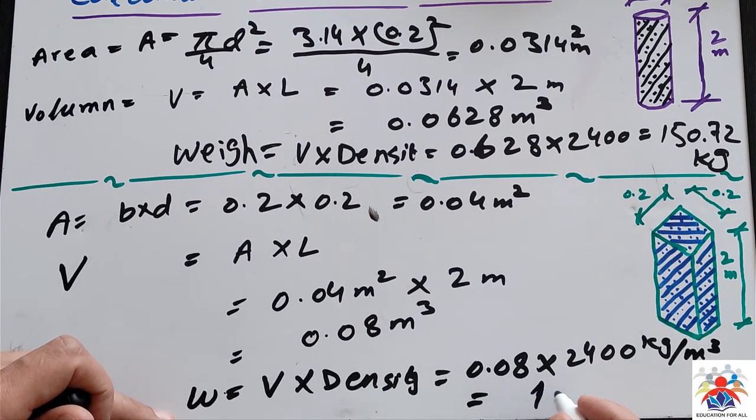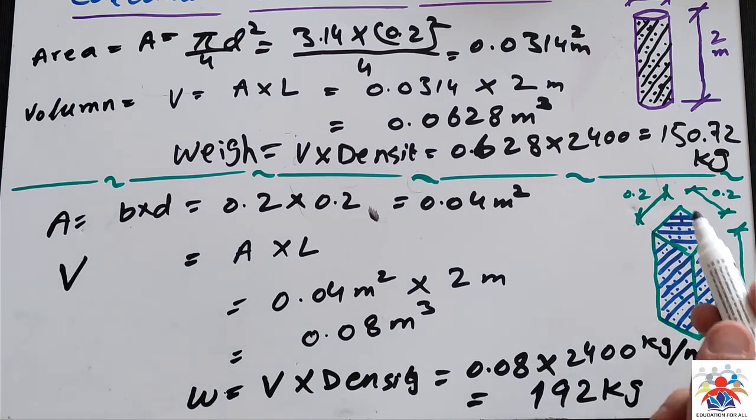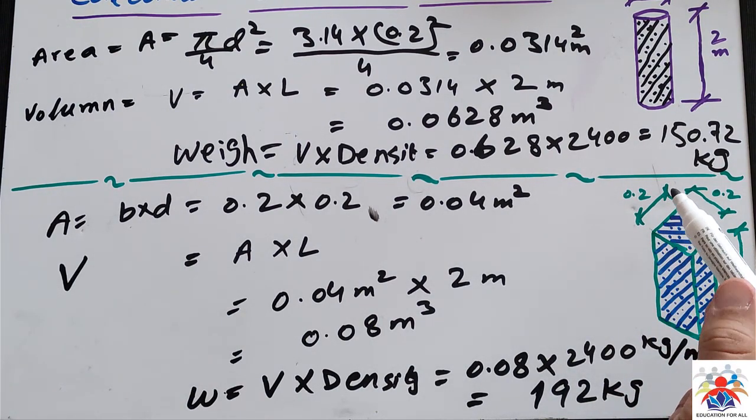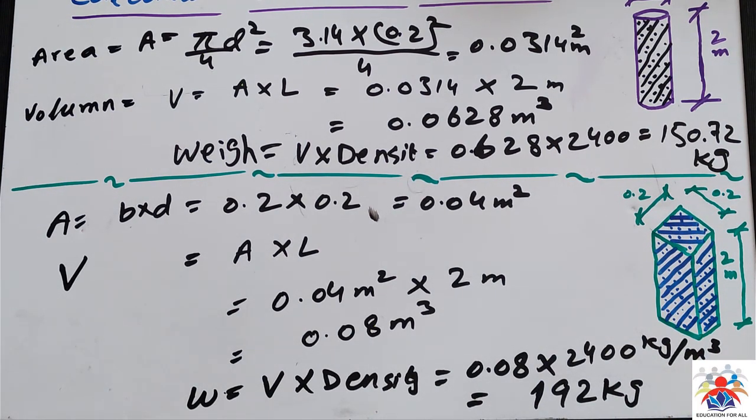As you have noticed, our round column is lightweight, but our square column is a little bit heavier than our round column.